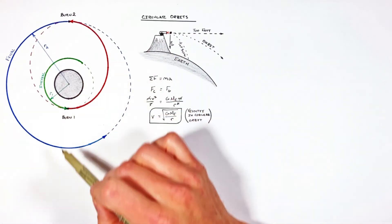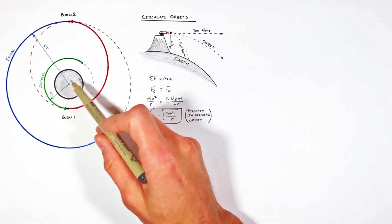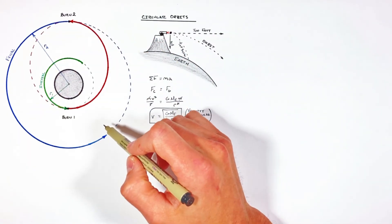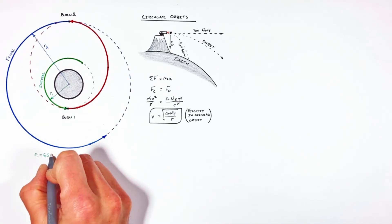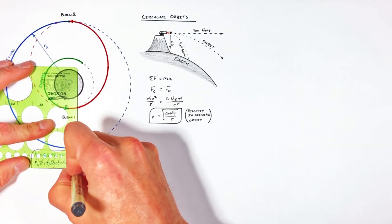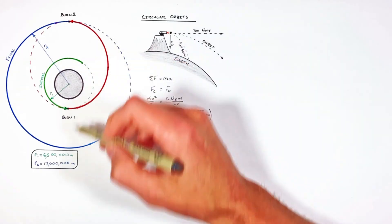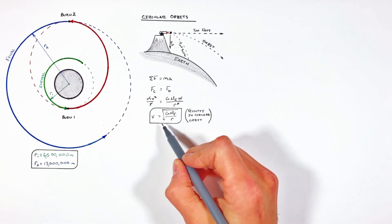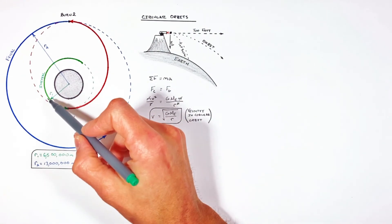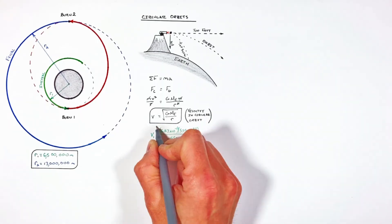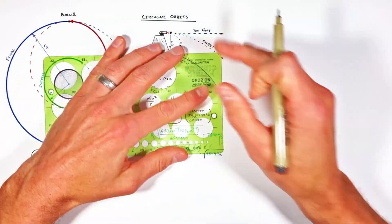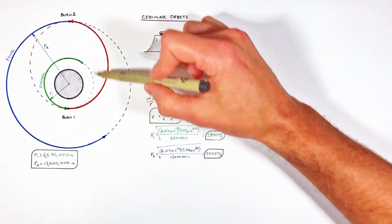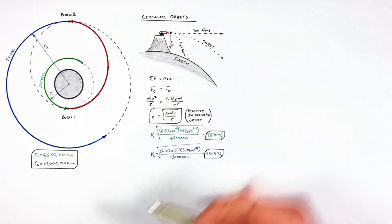Rather than working purely in variables, let's use some numbers, because there are a few really counter-intuitive issues that come up when you look at the actual outcomes of a Hohmann transfer. Starting with the satellite in low Earth orbit at an initial radius, then transferring it out to a greater radius, and applying the equation for circular orbit velocity to each orbit, we get two velocities. These are the velocities required for the satellite to remain in stable circular orbit around the Earth.